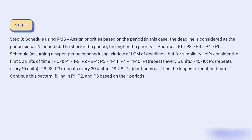RMS Schedule: 0–1: P1. 1–2: P2. 2–4: P3 (next priority). 4–14: P4. 14–15: P1 (repeats every 5 units). 15–16: P1 again. 16–18: P2 (repeats every 10 units). 16–28: P3 (repeats every 20 units). P4 continues as it has the longest execution time. Continue this pattern, filling in P1, P2, and P3 based on their periods.